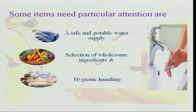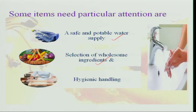Selection of wholesome ingredients is important — when you select vegetables, grains, and all, you select the best material so that it stays for a little longer time before you cook, and there is no infestation or infection in the foods that you consume. After getting good water and good vegetables and grains, it is not enough to purchase very good items without handling them properly. So hygienic handling is also very important.